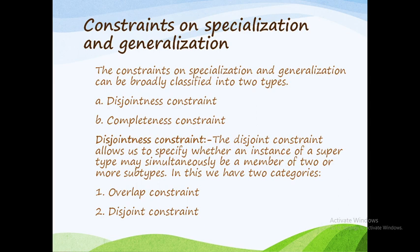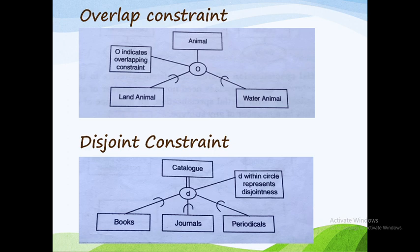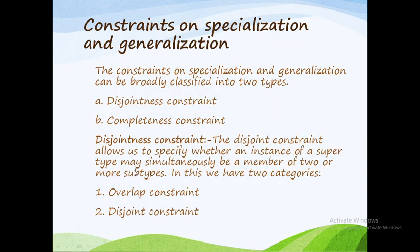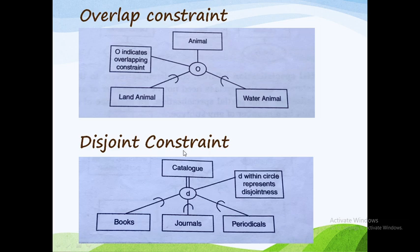Overlap constraint and disjoint constraint — first is overlap, second is disjoint. Overlap constraint means an entity may be a member of more than one subclass of the specialization. A supertype entity may be a member of more than one subclass of the specialization.